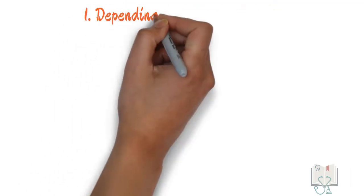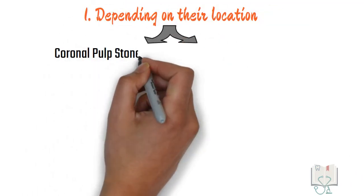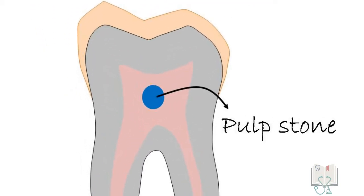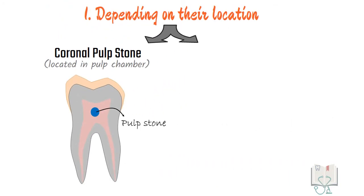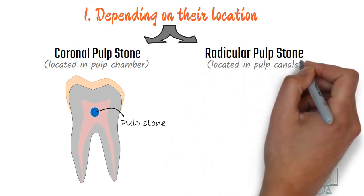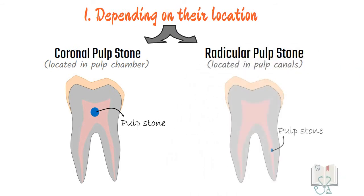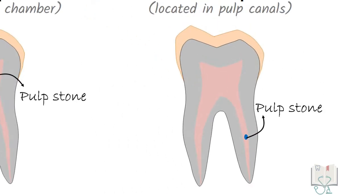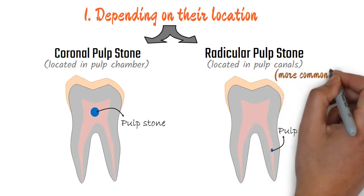Depending on their location, pulp stones can be classified as coronal pulp stones when located in the coronal part of the pulp, that is the pulp chamber, and radicular pulp stones when located in the radicular part of the pulp, that is in the pulp canals. Radicular pulp stones are more common than coronal pulp stones.